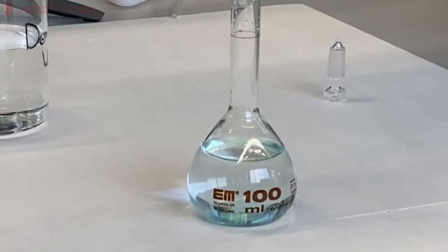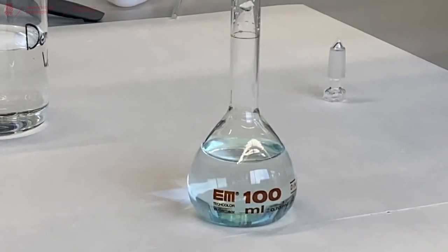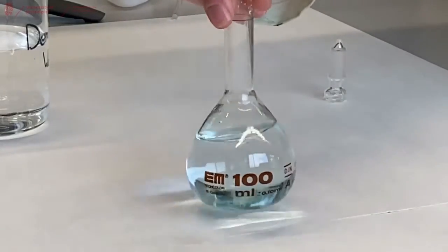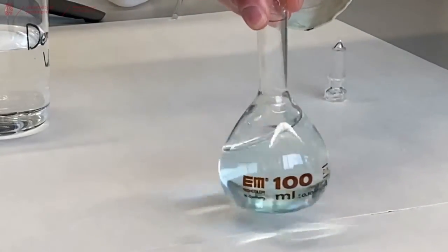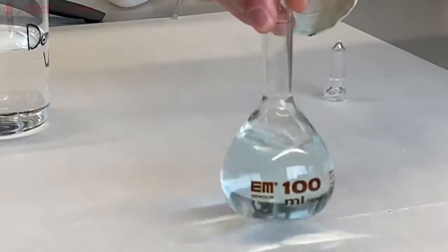When there's sufficient liquid in the volumetric flask, remove the funnel and gently shake to dissolve all of your compounds into your solution solvent.